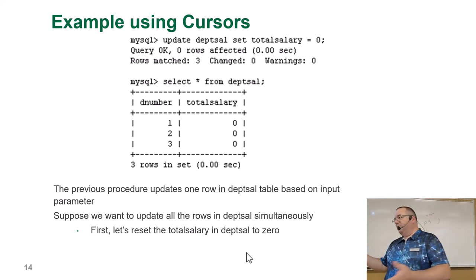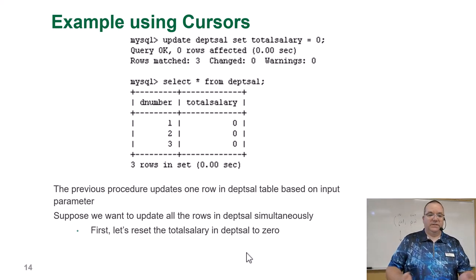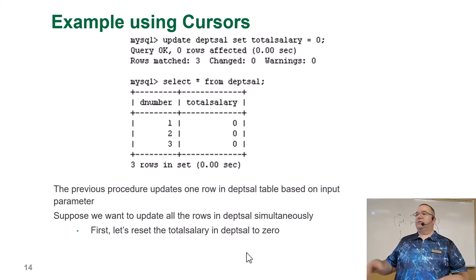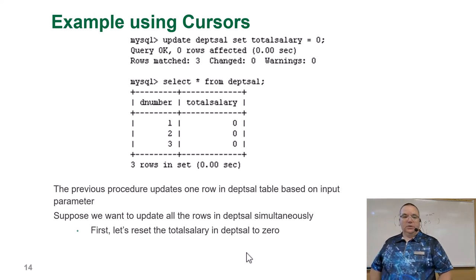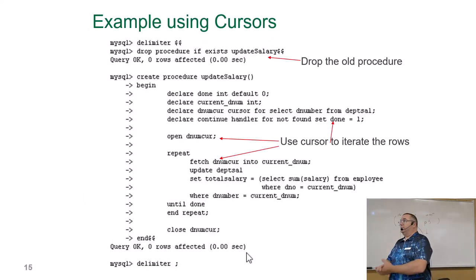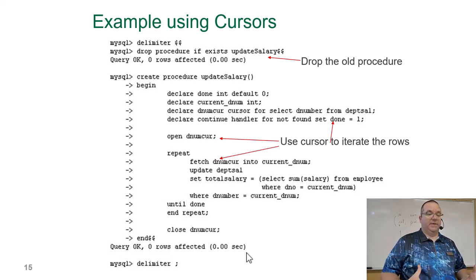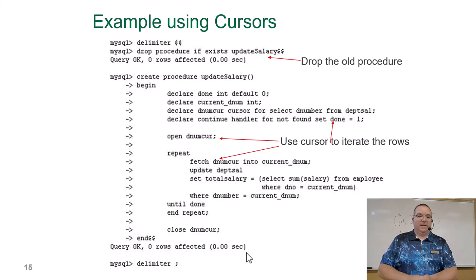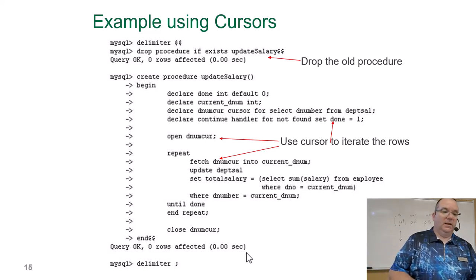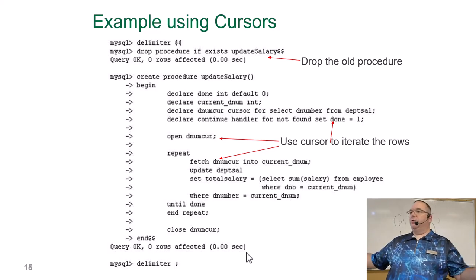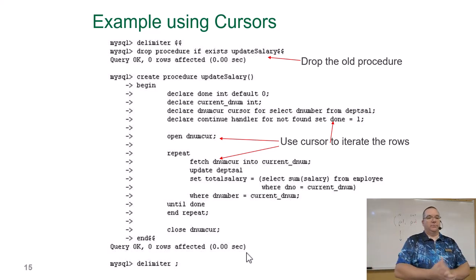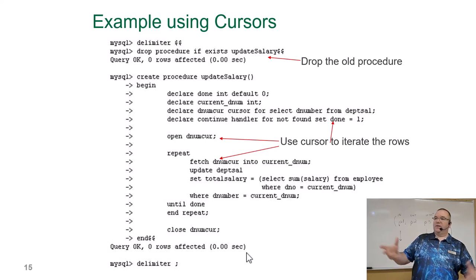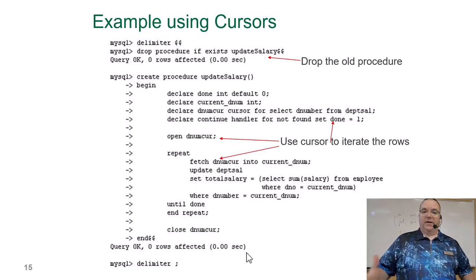Assuming we're going to redo the same example, we'd reset our depth table to zero. The previous procedure updates one row at a time based on the input parameter. Suppose we want to update all rows at once, which makes more sense. This is significantly longer now. We changed the delimiter to double dollar signs. We'll drop the procedure just in case it exists — because as you're testing, you'll want to recreate it multiple times. We start with CREATE PROCEDURE update_salary, and notice the parameter is now gone because we're going to affect all rows.